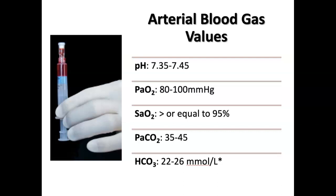Reviewing arterial blood gas values: your pH should be between 7.35 and 7.45. Your PAO2 is between 80 to 100 millimeters of mercury. Your SAO2, which can only be found during an arterial blood gas, is greater than or equal to 95%. The one you measure with a pulse oximeter is the SpO2 — saturation of peripheral oxygen — not the arterial oxygen, which is the 'A.' Your PaCO2 is 35 to 45, and your HCO3 is 22 to 26 millimoles per liter. Most references use 22 to 26, and that's what we will use.